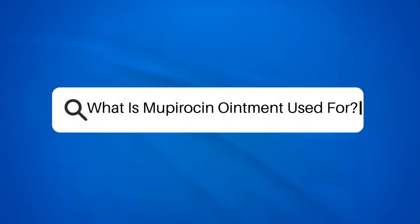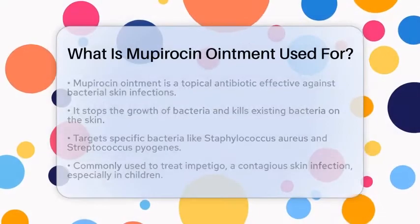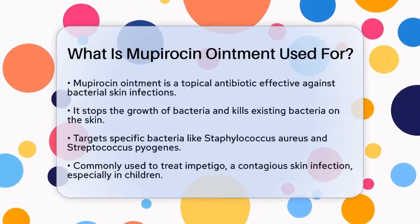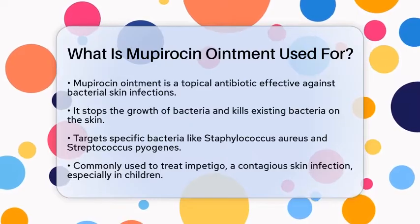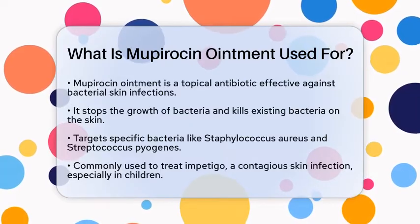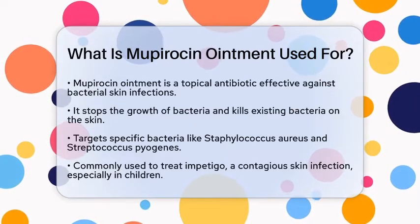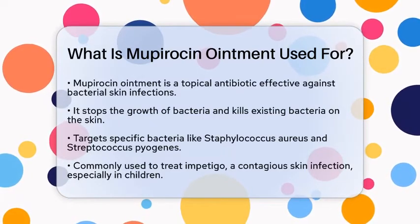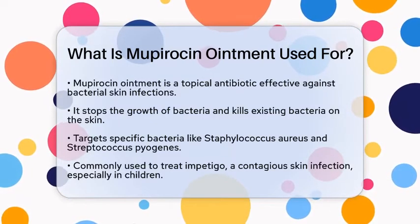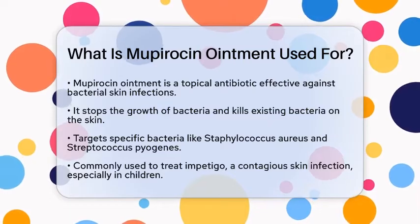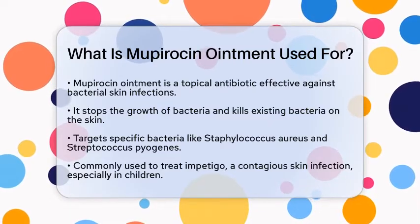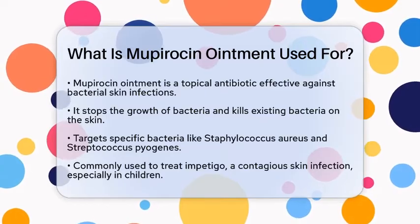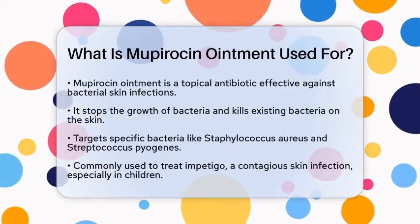What is Mupirocin ointment used for? This topical antibiotic is quite effective in treating various bacterial skin infections. Mupirocin works by stopping the growth of bacteria and killing those already present on the skin. It targets specific bacteria, including Staphylococcus aureus and Streptococcus pyogenes, which are common culprits in skin infections.